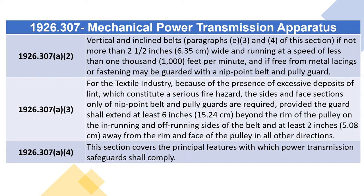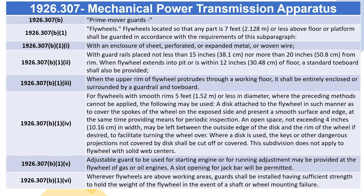1926.307(a)(2): Vertical and inclined belts per paragraphs (e)(3) and (4), if not more than two and a half inches (6.35 cm) wide and running at a speed of less than 1,000 feet per minute and free from metal lacings or fastening, may be guarded with a nip point belt and pulley guard. 1926.307(a)(3): For the textile industry, because of excessive deposits of lint constituting a serious fire hazard, only the sides and face sections of nip point belt and pulley guards are required, provided the guard extends at least six inches beyond the rim of the pulley and at least two inches away from the rim and face of the pulley in all other directions.